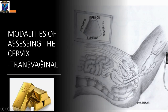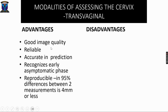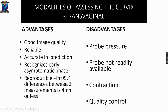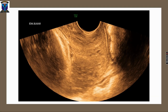Transvaginal ultrasound is the gold standard for assessing the cervix — remember to place the probe in the anterior fornix. Its advantages are: very good image quality, reliable and accurate in prediction, it recognizes the early asymptomatic phase, and it is reproducible in 95% of cases. Differences between examinations by the same or different examiners show a difference of 4 millimeters or less. Disadvantages include: probe pressure can cause cervical contraction and elongation, the probe is not readily available everywhere, contractions are very common during cervical scanning, and quality control is an issue.